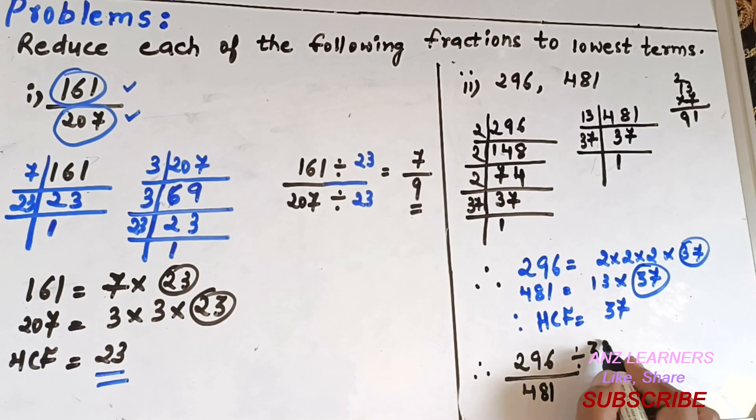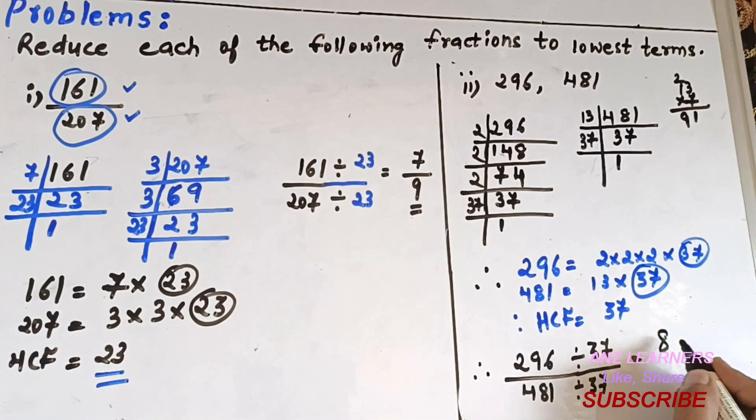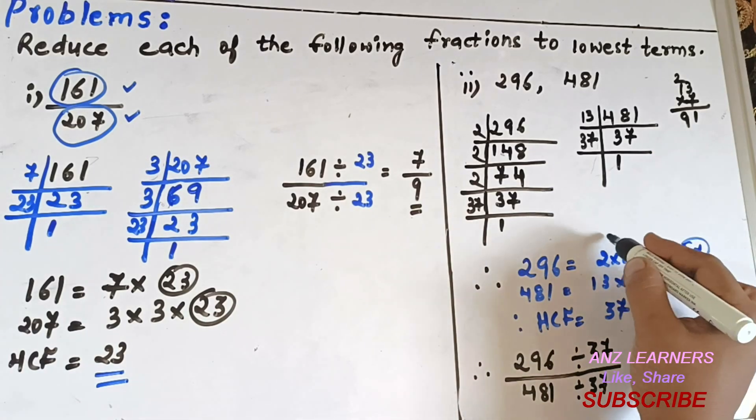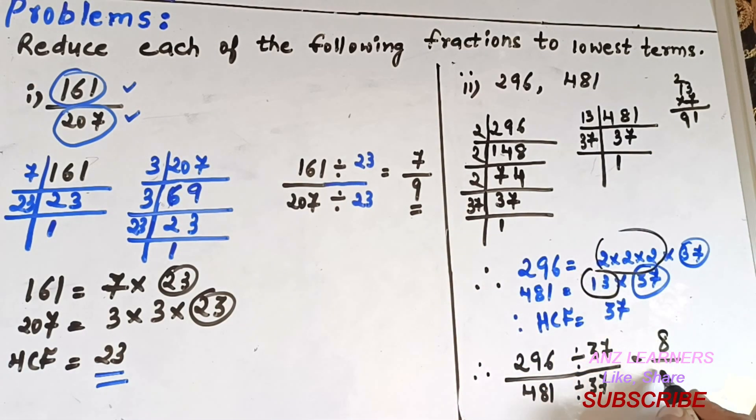Dividing 296 upon 481 by the HCF, which is 37, we get 8 upon 13, which are co-prime to each other. So they can't be reduced further since they have only one as a common factor. Thank you.